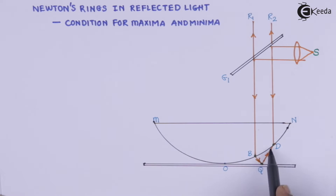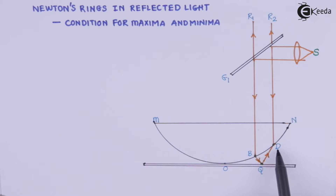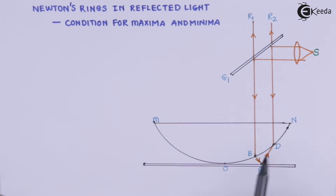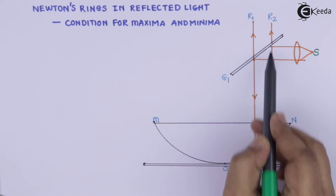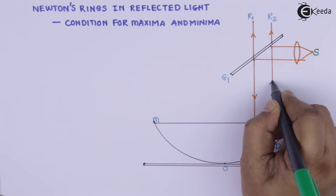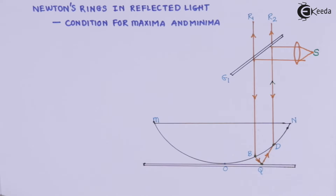At that glass plate there will be a transmission — which we are not showing — and also a reflection. This reflected ray will be incident on the lower plano-convex surface at point D. When it reaches point D, it will undergo refraction and this ray will get refracted upward.